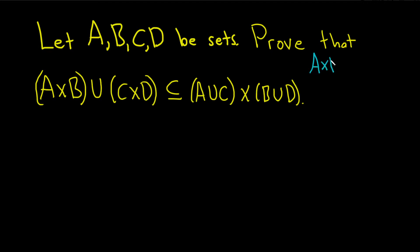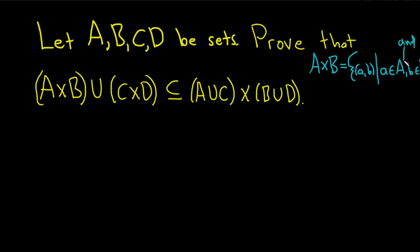A cross B is called the Cartesian product of A and B, and it's the set of all ordered pairs of the form (a, b), such that little a is in capital A and little b is in capital B. So it's just all the ordered pairs where the first component belongs to the first set and the second component belongs to the second set.